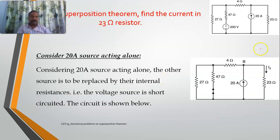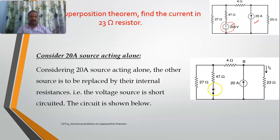Now I need to determine the contribution of the 20 ampere current source. If only this source is present, the 200 volt voltage source is to be replaced. Since it is a voltage source, I will short-circuit it. Now I need to determine the response again.